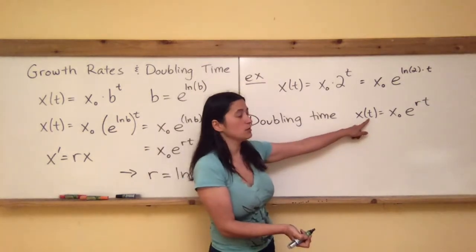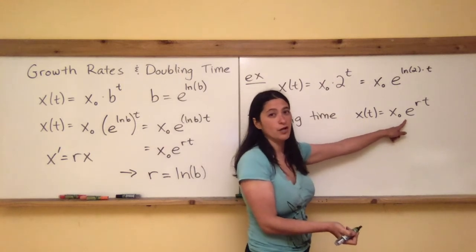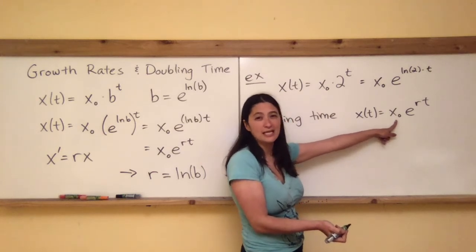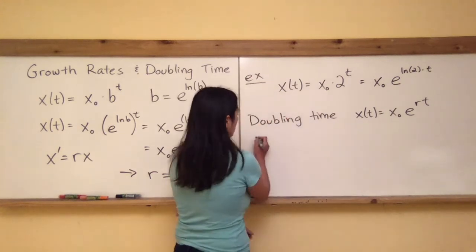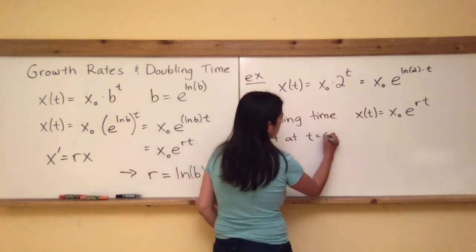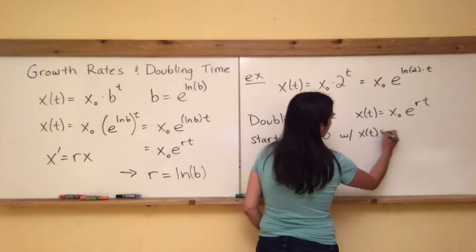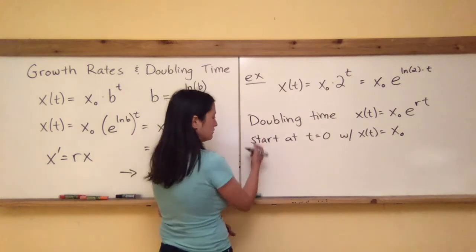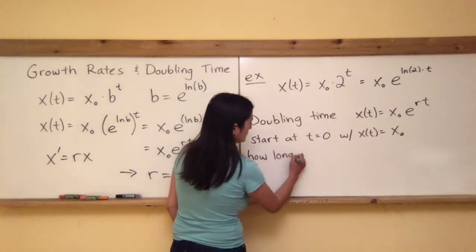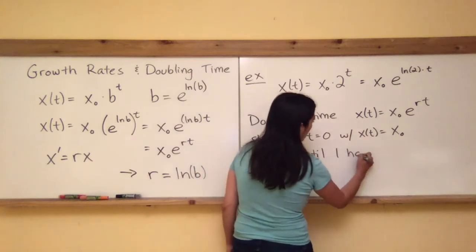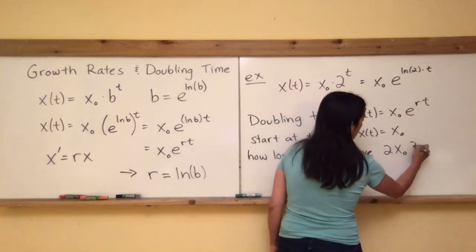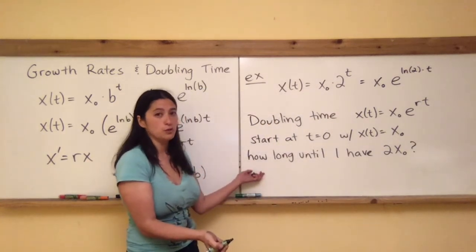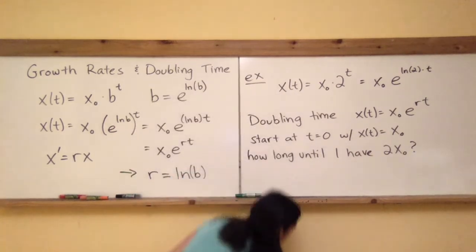If I plug in T = 0 here, remember e^0 is always one, so my starting amount at time equal to zero is just this number right here. That's why it's called X₀. That's how much I started with. So I start at T = 0 with X(0) = X₀. And so the question of doubling is how long does it take until I have 2 times X₀? Because 2X₀ will be double of what I had before. So whatever amount answers this question is going to be known as the doubling time.